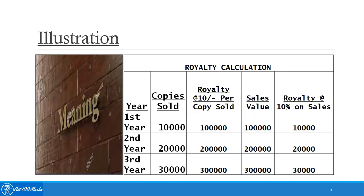If you see in this table, in the first year the number of copies sold was 10,000. So royalty on a unit basis at the rate of 10 per copy sold will be one lakh rupees. The sales value is also one lakh rupees. Similarly, for the second year and third year, royalties can be on a unit basis or on the percentage of sales or revenue basis.